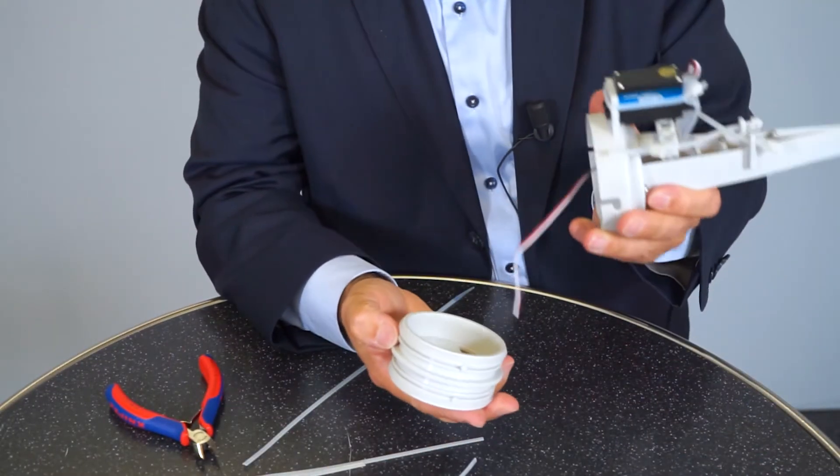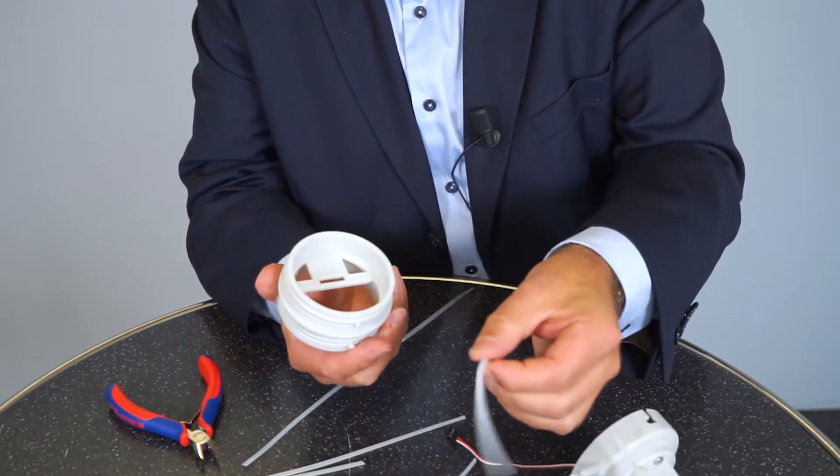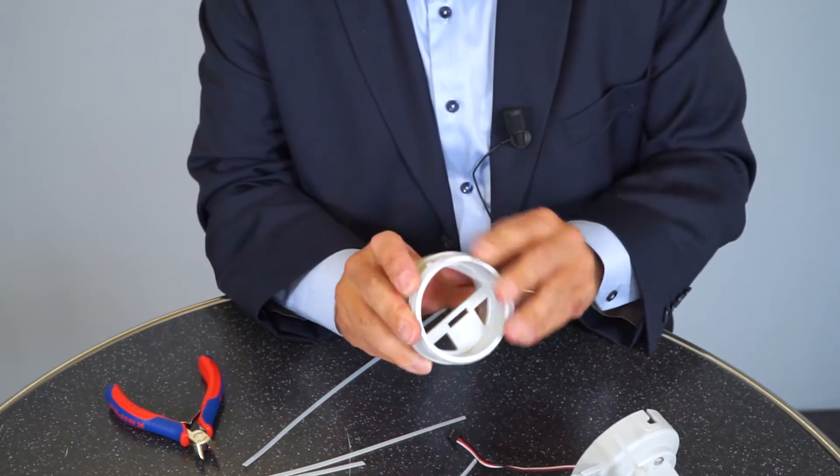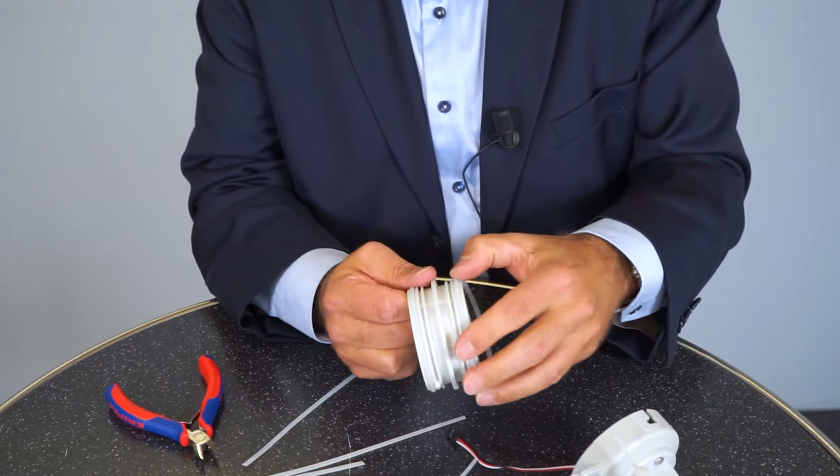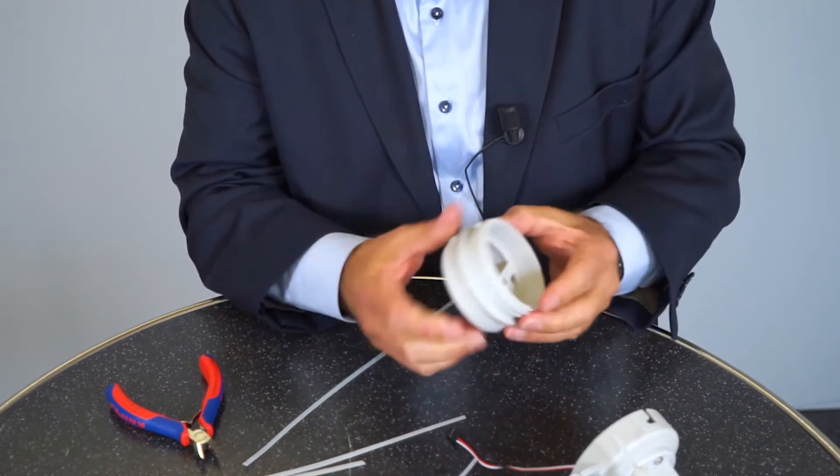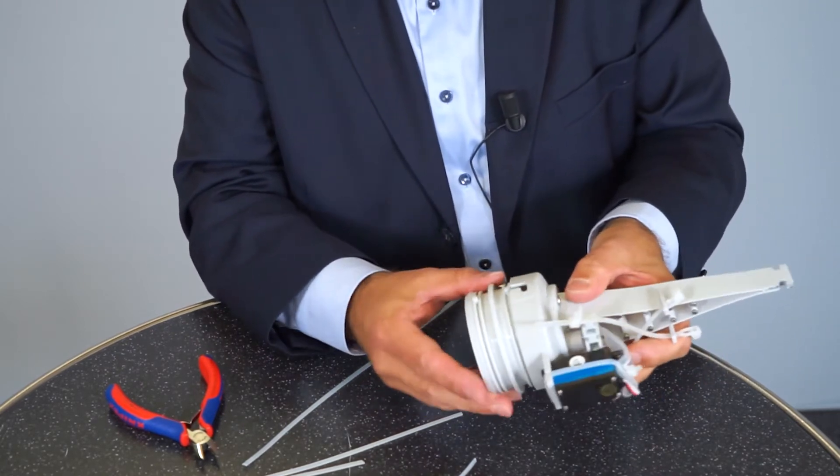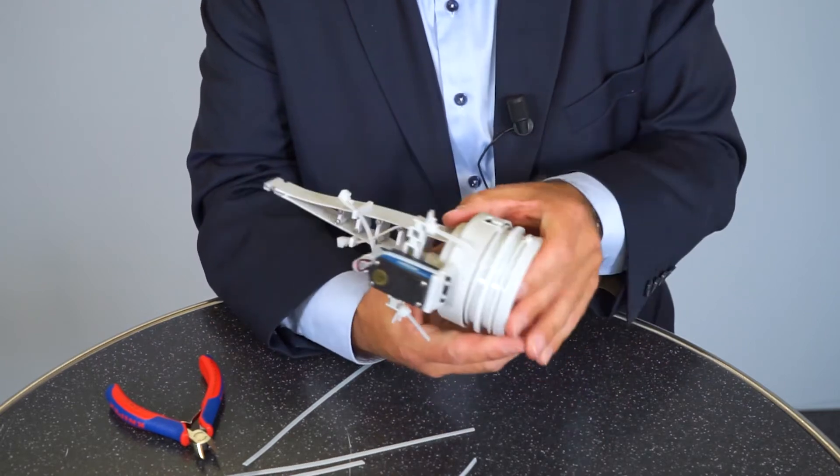The next step is to install the middle ring. For the middle ring it's very important that the O-rings are installed. These O-rings will seal the whole thing against the water. We have two of them on both sides, here and here. Then you put the ring together with the fin ray part, slowly but surely.